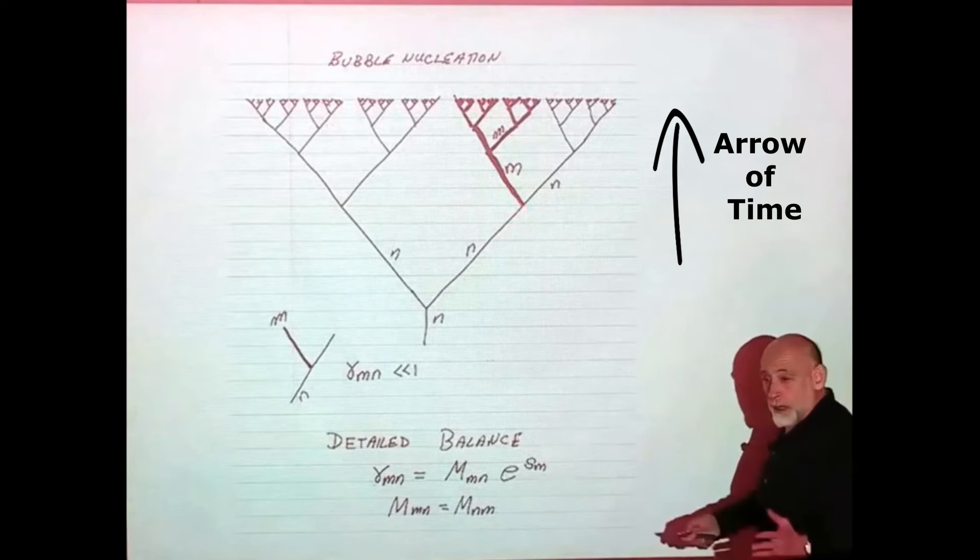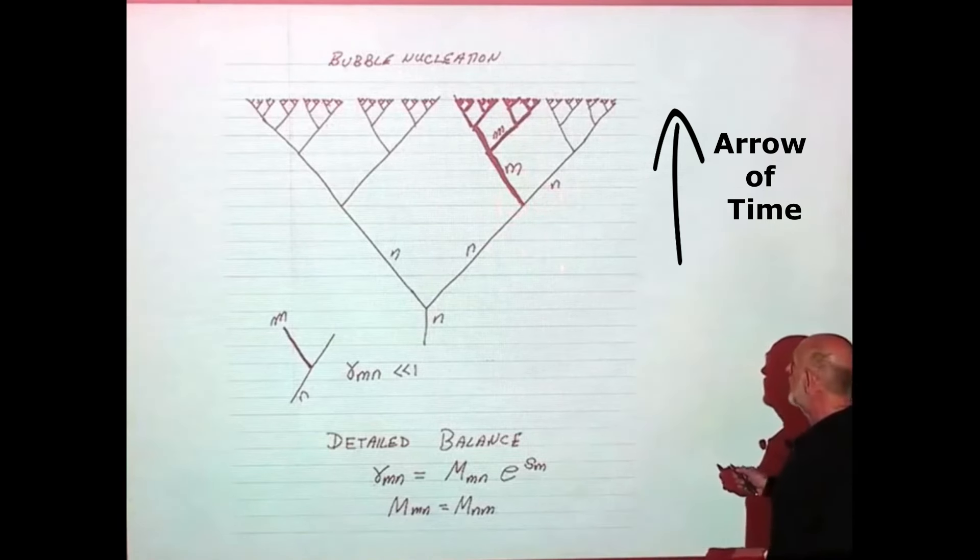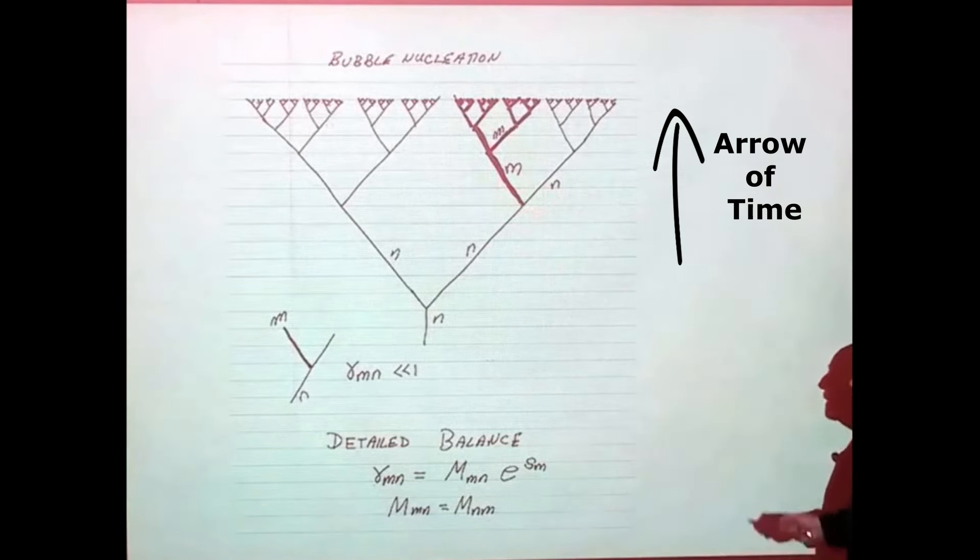That point is a bubble nucleation. It's the bubble nucleation of a bubble of type n, m, m, in a background of n, okay? And there's a rate for it.